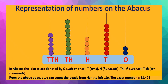Now look at the abacus shown here. It has 5 spikes showing ones, tens, hundreds, thousands, and ten thousands. Here O means ones, T means tens, H means hundreds, TH means thousands, and TTH means ten thousands.